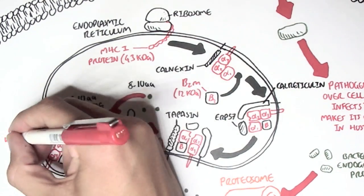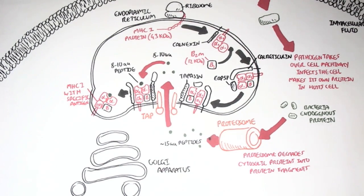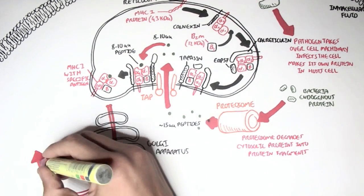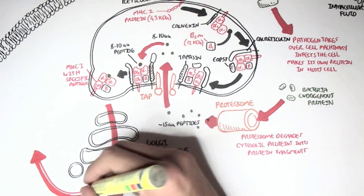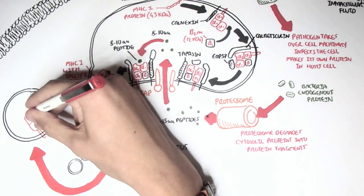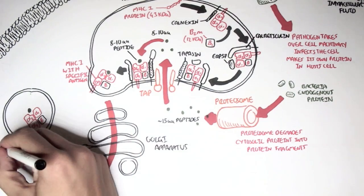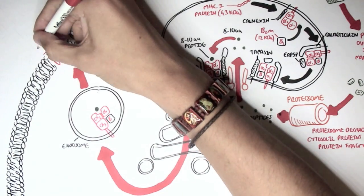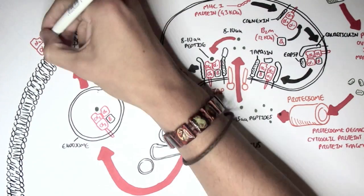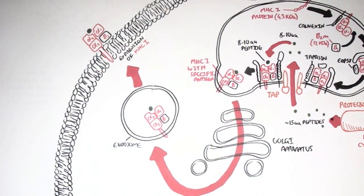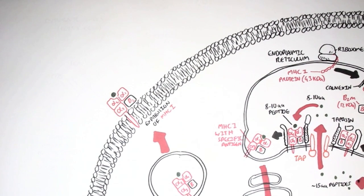And it will leave the endoplasmic reticulum in an endosome, and it will go through the Golgi apparatus in the normal endo-exocytosis process. And it will then, from the Golgi apparatus in the endosome, the MHC class 1 together with the peptide, will be presented on the cell surface. So, this cell, which is infected by the bacteria, will express MHC class 1 with a small fragment of the bacteria on its cell surface. This is what is happening.